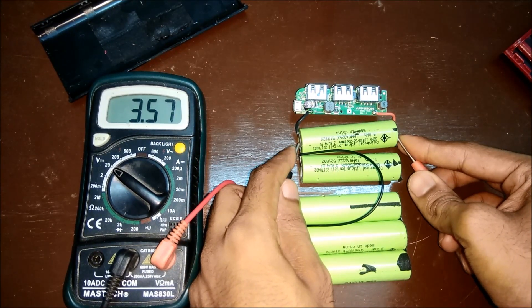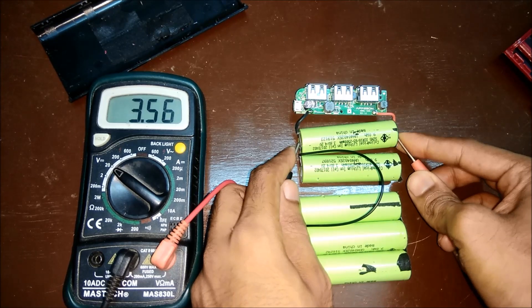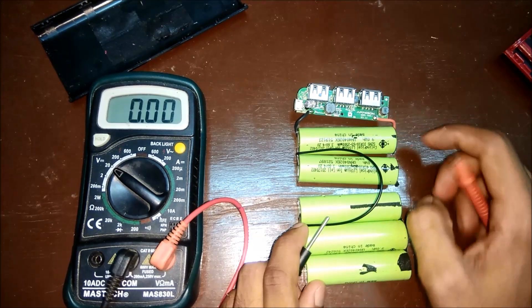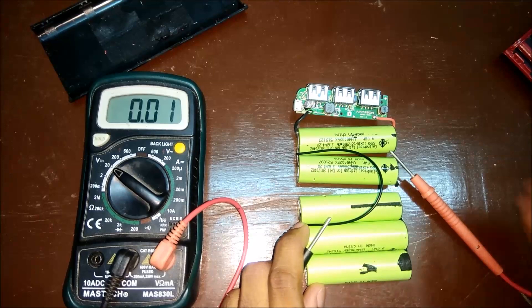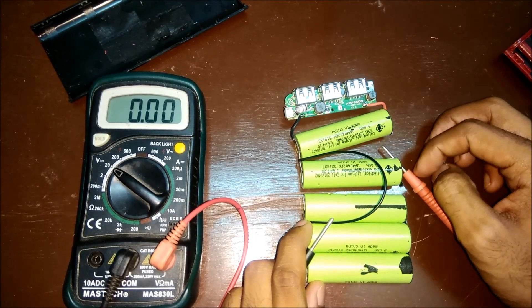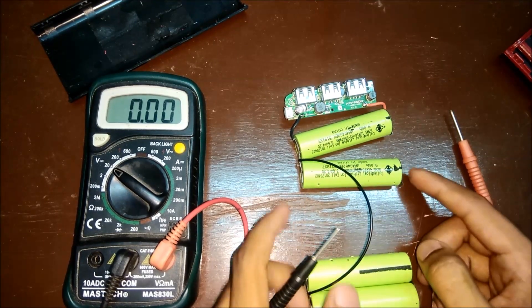And this is 3.56, so that means this battery voltage has dropped. So this seems to be a faulty battery. So now what we'll do is we'll separate the wires from this battery and remove this battery from the whole set.